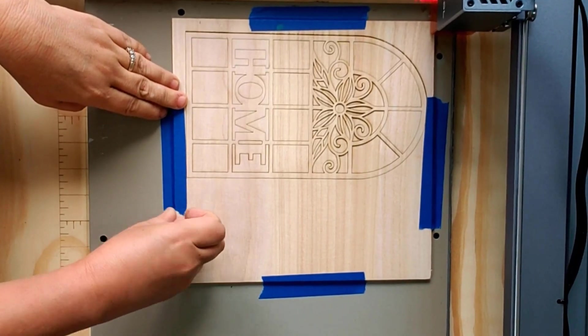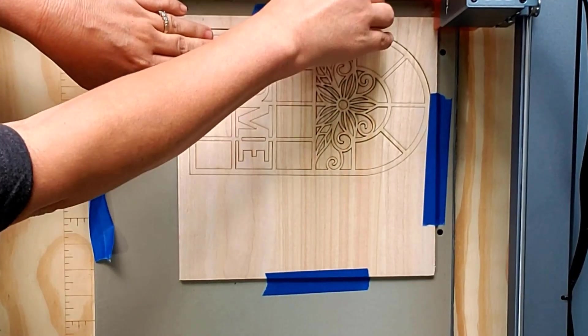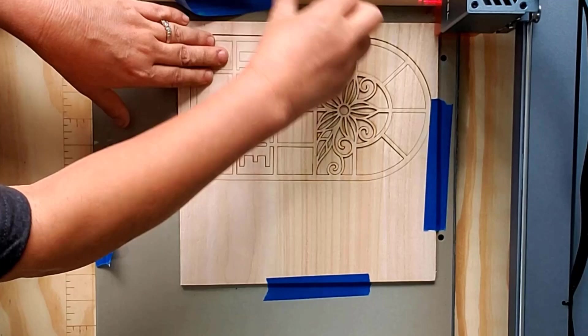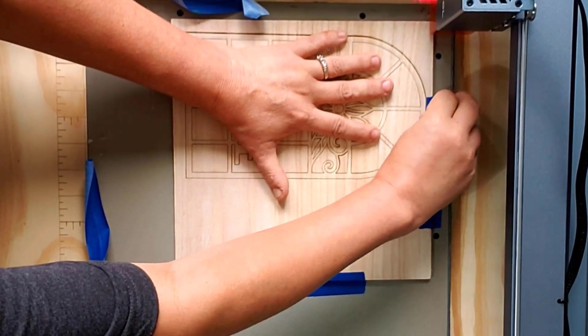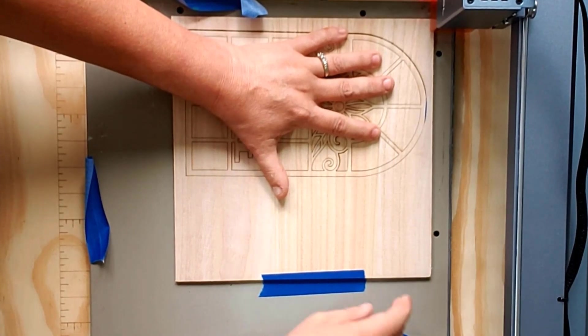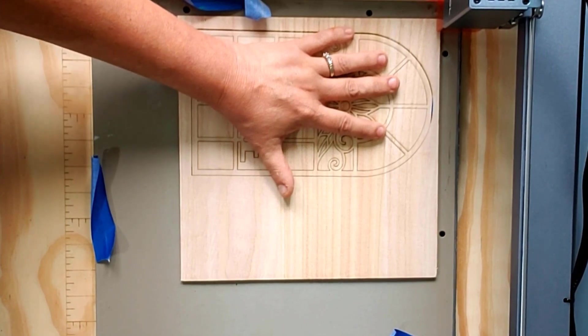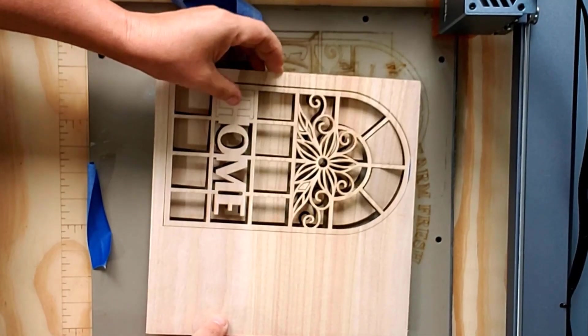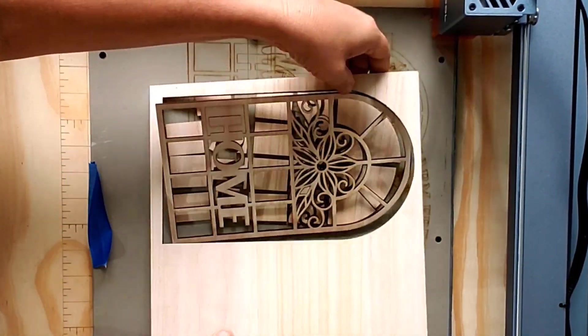Once the cut was finished, I removed the tape from the sides, which I had used because the wood was a little bowed and I wanted it to lay flat. Plus, this holds the wood in place in case I needed to make any extra cuts. Perfect! Everything cuts smooth and looks amazing!